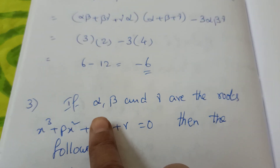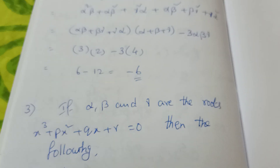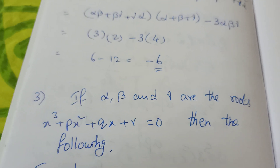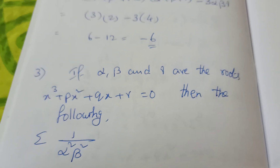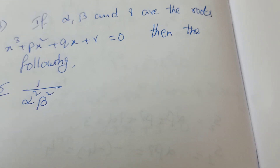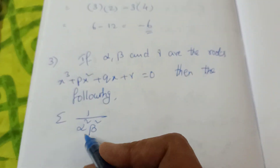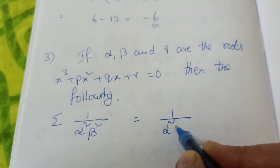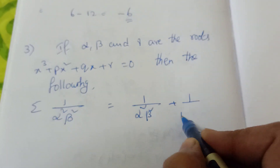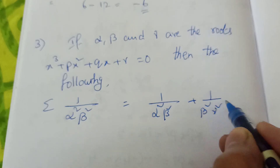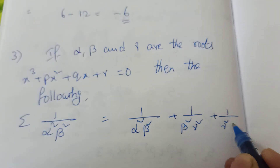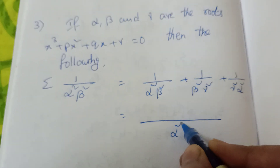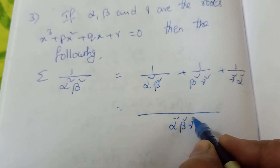See this question: if Alpha, Beta, Gamma are the roots of x³ plus 9px² plus qx plus r equal to 0, then find the value of Σ(1/α²β²) — that is 1/(α²β²) plus 1/(β²γ²) plus 1/(γ²α²). Take the LCM — what is the LCM here? Alpha square, Beta square, Gamma square.